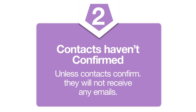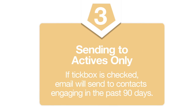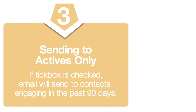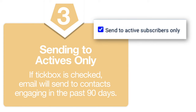2. All contacts in the list may not have confirmed their double opt-in. Unless subscribers confirm their subscription with you, you would not be able to send emails to them. This does not apply if you have disabled double opt-in with your Empire add-on subscription plan. 3. You may have set the email to send to active subscribers only. On the email editor, if this checkbox is marked, this newsletter would only send to contacts that have been engaging with you in the past 90 days. If all contacts in the list have never engaged with you within that period, your email was sent to zero recipients.